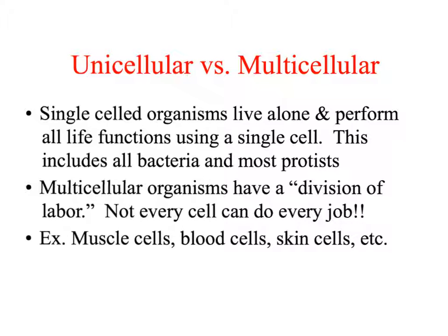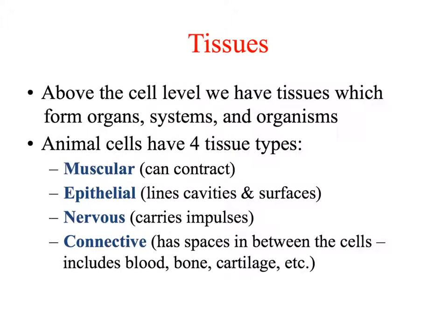Single-celled organisms don't have many organelles and can maintain homeostasis independently. In multicellular organisms, homeostasis is maintained because everything has a job — muscle cells, blood cells, skin cells all have organelles helping their cells function, and those cells work together for the total organism. Cells become tissues, tissues become organs, organs become organ systems, then organisms, populations, and on up to the biosphere.